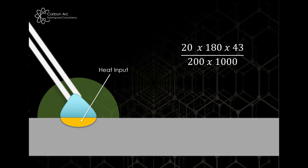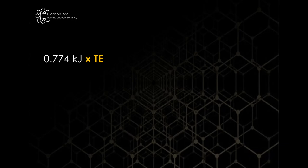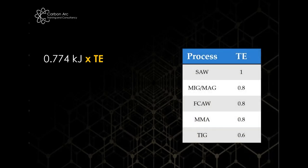So if we're looking at heat input here, it's still the same equation. So I can still use my 20 volts times 180 amps by 43 seconds. We've traveled for 200 millimeters and so on. But what we're going to do is when we calculate that all out, that number of kilojoules we had before, we're going to times that by what we call a thermal efficiency. Now every process has its own thermal efficiency and we've got to know that.